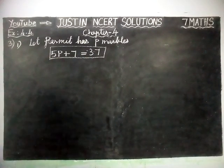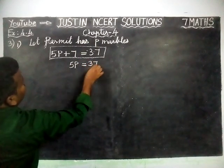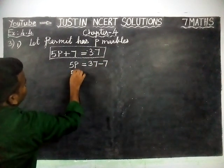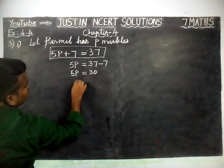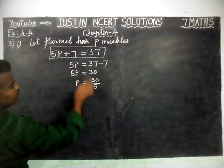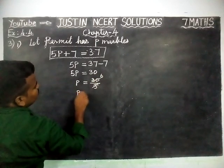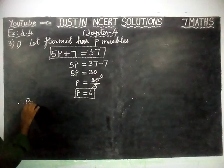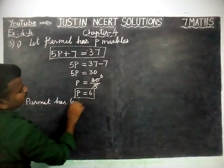Now we are going to find the solution. 5P = 37 − 7, this plus 7 is going to the right-hand side so minus 7. 5P = 37 − 7 = 30. P = 30 ÷ 5, because this is multiplication so it becomes division. 6 fives are 30, so P = 6. Therefore, Permit has 6 marbles.